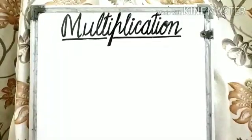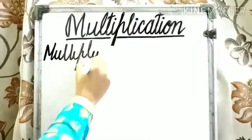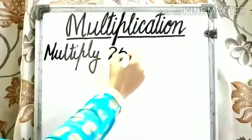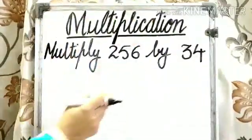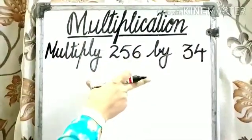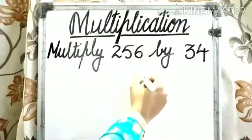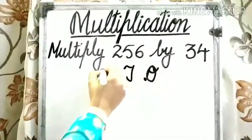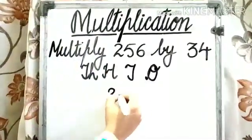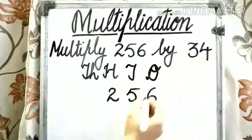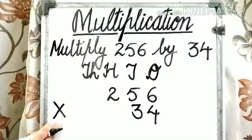Students, let's solve the next example now. In this example, we have to multiply 256 by 34. So first of all, we need to arrange these numbers under the headings of 1s, 10s, 100s, and 1000s. Write down the headings first: 1s, 10s, 100s, 1000s. We have to multiply 256 by 34. Do not forget to put the symbol of multiplication.